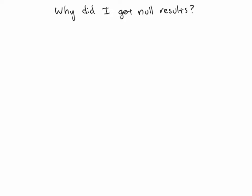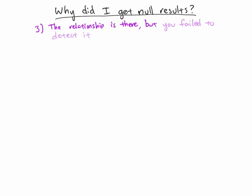We're still talking about why you get null results in a study. My results came in and I was expecting a particular relationship, but the data was such that I can't be confident that the pattern I'm seeing isn't simply the result of chance. Or maybe I don't even see any pattern at all. The question is why — and one possibility is that the relationship is there, but you failed to detect it. What could be going on that a relationship could exist in your study but your data isn't showing it?